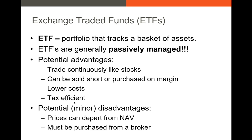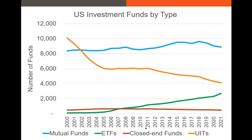ETFs are somewhat tax-efficient because they hold assets for a fairly long time. However, there are some disadvantages — because ETFs trade like stocks, their price can actually diverge from the NAV. Investors can bid up the price of an S&P 500 ETF beyond the NAV, so it's possible to get a premium to net asset value. ETFs also typically have to be purchased through a broker.